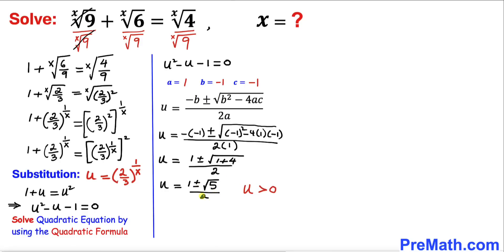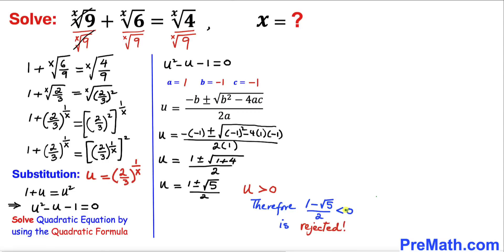We have to be careful: u must be greater than 0 since u is an exponential function. We know that (1 minus square root of 5) divided by 2 is less than 0, so we reject that value. Therefore we take only the positive value: u equals (1 plus square root of 5) divided by 2.